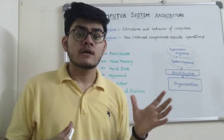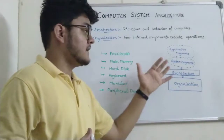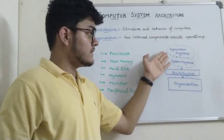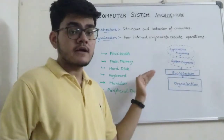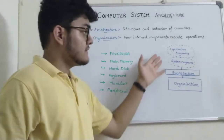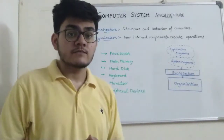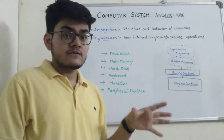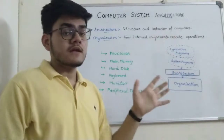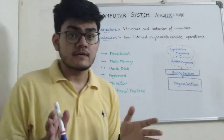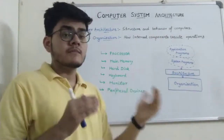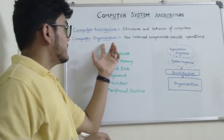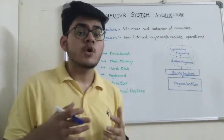Application programs basically run on system programs, and system programs are written by system programmers in assembly or other machine-level languages. System programmers are concerned with making the architecture of the computer in such a manner that application programs can run smoothly on it. Computer architecture is the structure and behavior of the computer.